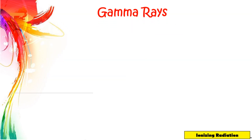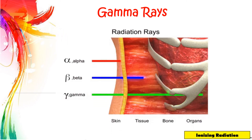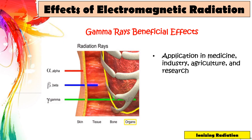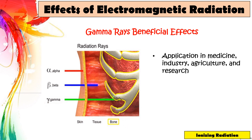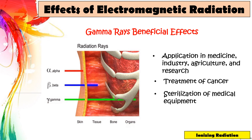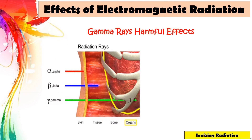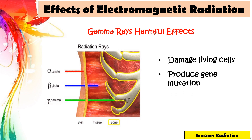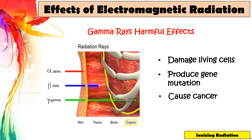Gamma rays have the shortest wavelength among the radiations and the highest energy. The benefits of gamma rays include applications in medicine, industry, agriculture, and research, treatment of cancer, and sterilization of medical equipment. The harmful effects of gamma rays include damage to living cells, increased gene mutation, and can cause cancer.